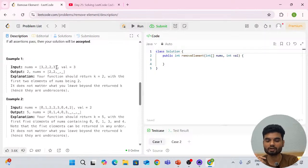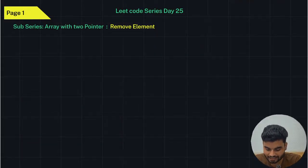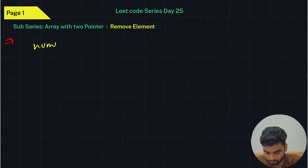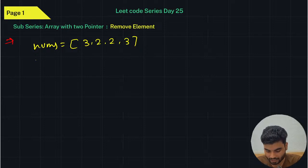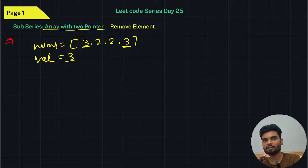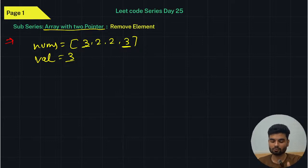Let's understand how to solve this using a PPT. We have nums = [3, 2, 2, 3] and value = 3. We want to delete this 3 from the array using the two-pointer approach. When deletion is dependent on two pointers — either placing or removing elements — you always go for the two-pointer technique.